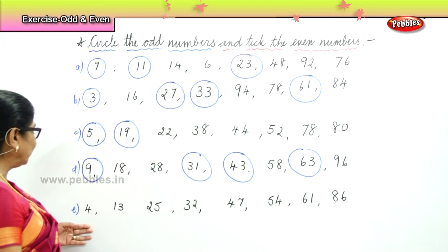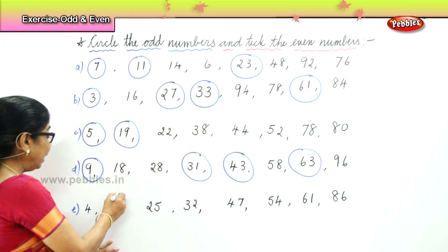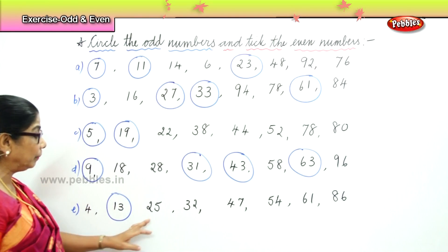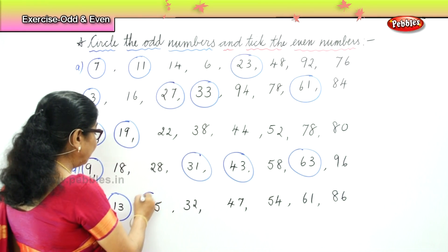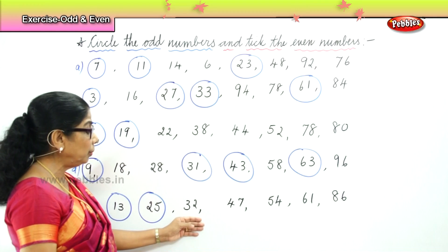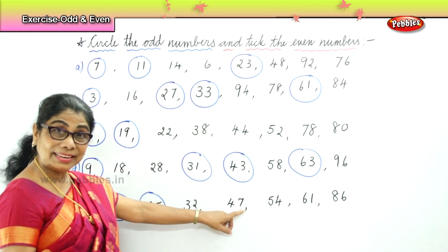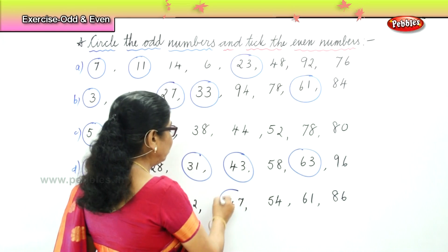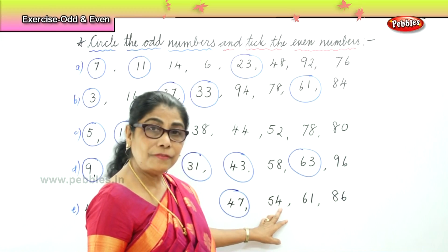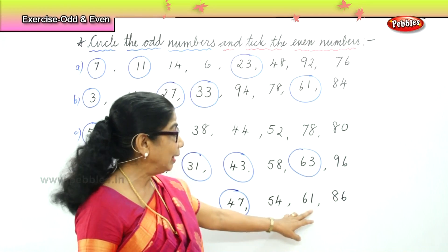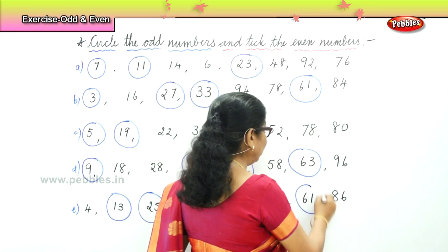Last set: Four — no. Thirteen ends in three — thirteen is an odd number. Twenty-five ends in five — it's an odd number. Very good. Thirty-two ends in two — no. Forty-seven ends in seven — odd number. Very good. Fifty-four ends in four — is it an odd number? No. Sixty-one ends in one — odd number. Very good.